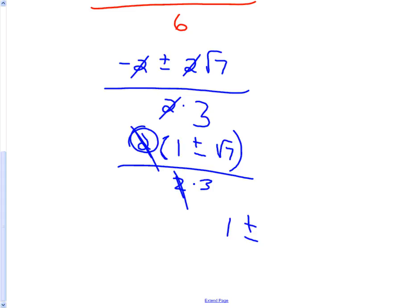One plus or minus, did I drop a negative? Yeah, it's supposed to be a negative right there, sorry about that. Negative one plus or minus square root of seven all over three. Any other questions?